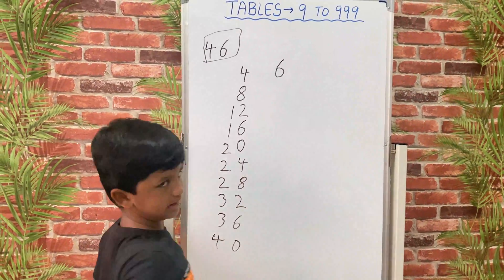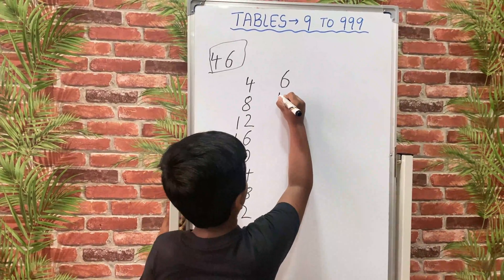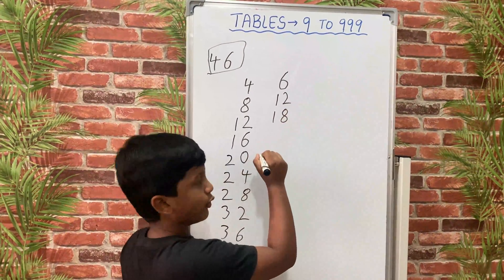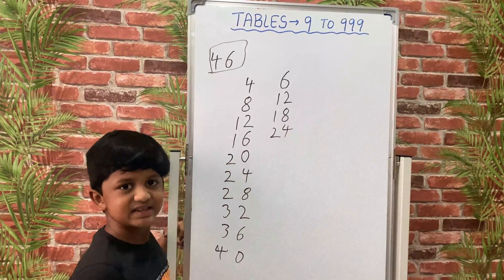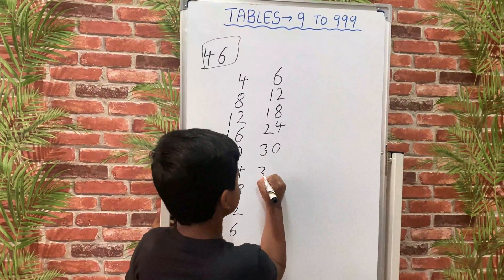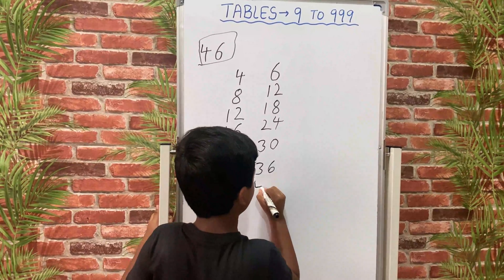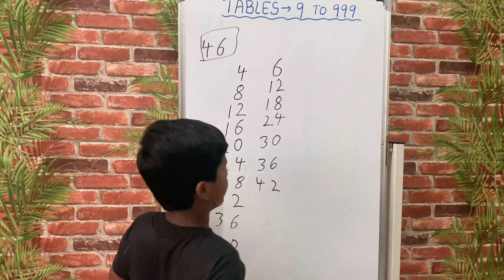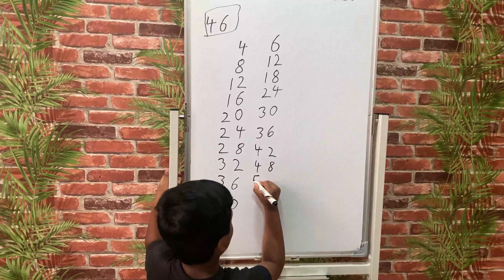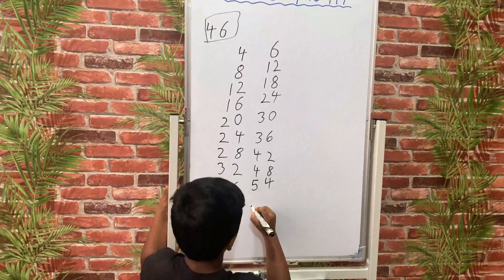Then we will write the next number's table — that is 6. The 6 times table: 6×1 is 6, 6×2 is 12, 6×3 is 18, 6×4 is 24, 6×5 is 20, 6×6 is 26, 6×7 is 42, 6×8 is 48, 6×9 is 44, and 6×10 is 16.